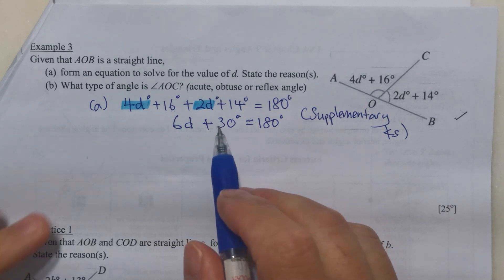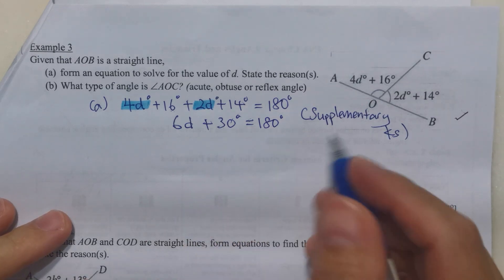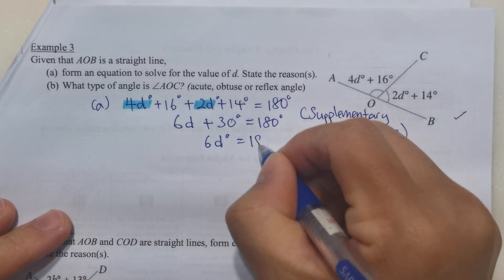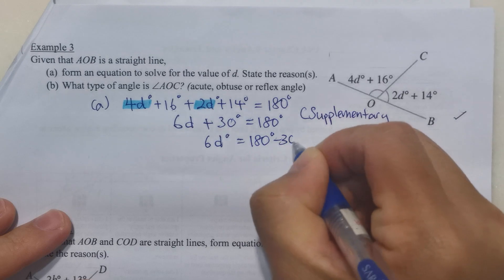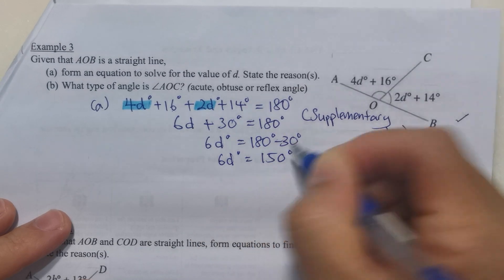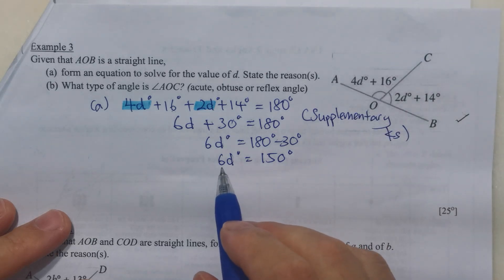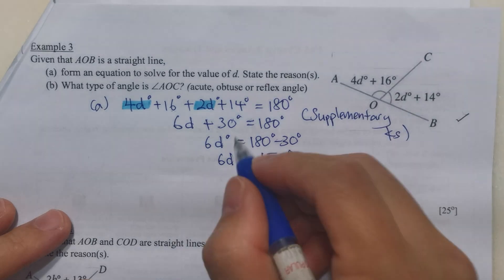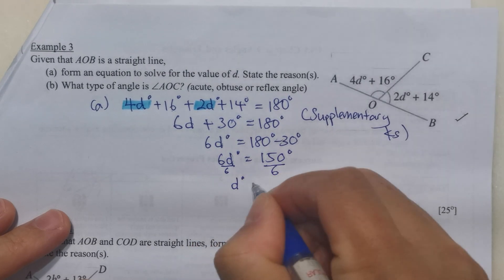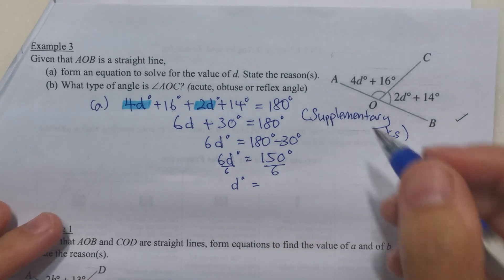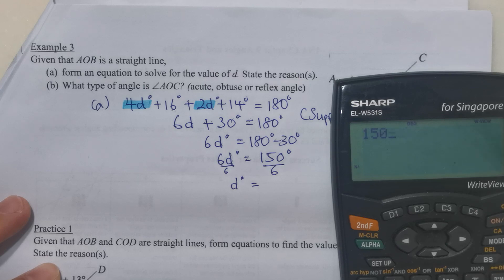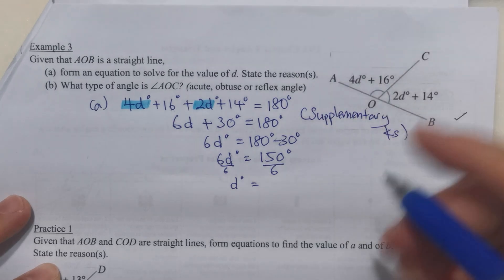Now we have to eliminate 30 degrees, so we subtract both sides by 30. 6D will be equal to 180 minus 30 degrees. This will give us 150 degrees. Now I need to eliminate 6. To eliminate 6, I need to divide both sides by 6. So angle D will be equal to 150 divided by 6. If you find difficulties, you can use a calculator. 150 divided by 6, we have 25 degrees.